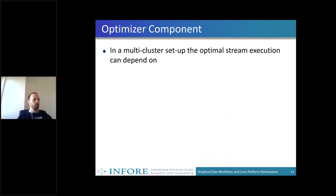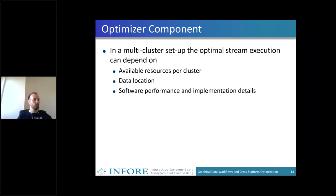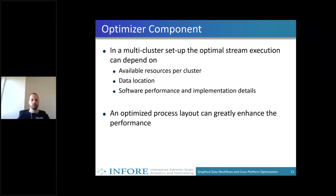What this optimizer does is: if you have a multi-cluster setup with several clusters in a large infrastructure, the optimal execution can depend on different aspects — obviously what resources are available, how many nodes each cluster has, how much memory and how many CPUs are available, and how many parallel tasks can be executed. Of course, where the data is located also matters. It doesn't make sense to use a very fast cluster if the data must first be shipped via the internet to it, causing a large transfer lag. Some operations might run faster on different backends, or specific operations might only be available on certain backends. Overall, an optimized process layout and optimal backend exchange between clusters can greatly enhance the performance of such a workflow.